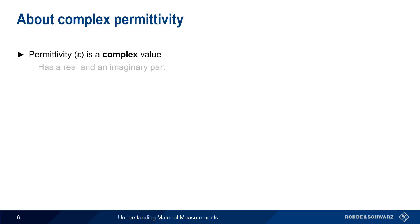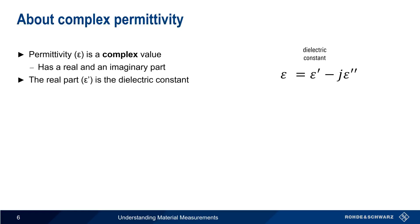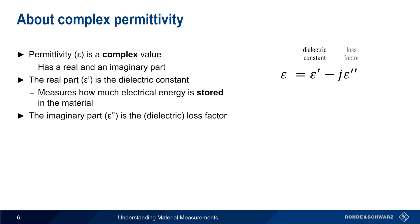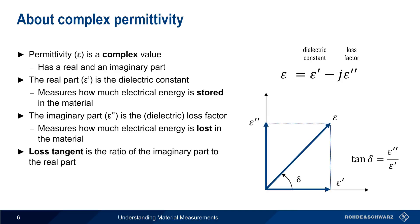It's important to know that permittivity is a complex value — that is, it has both a real and an imaginary part. The real part is the so-called dielectric constant, which measures how much energy from an external electric field is being stored in the material. The imaginary part is called the dielectric loss factor, and measures the amount of electrical energy that's lost in the material. The relationship between these two values is sometimes expressed as the loss tangent, or tan delta, which is the ratio of the imaginary to the real part. When we make material measurements, these are the values that we're trying to determine.